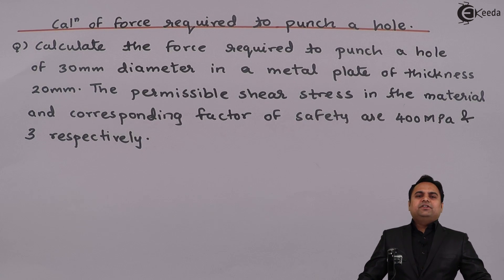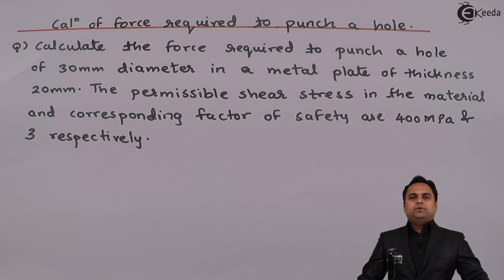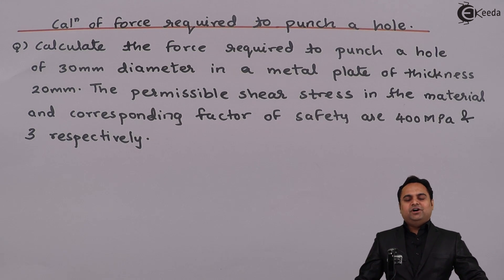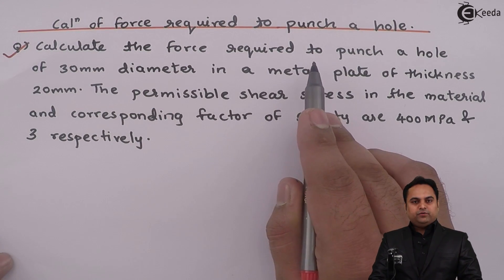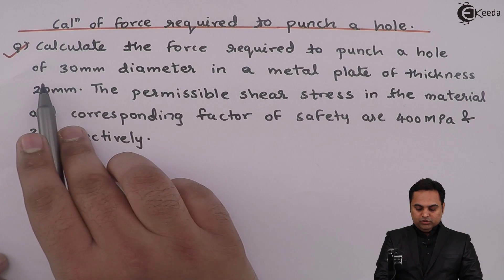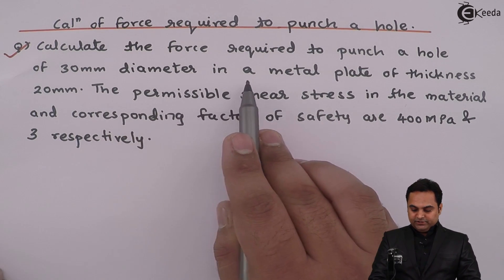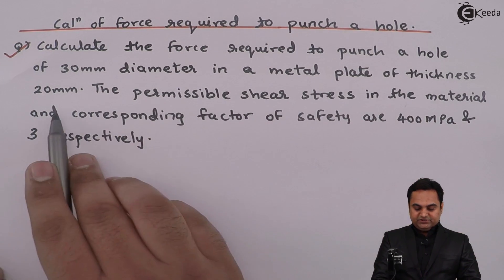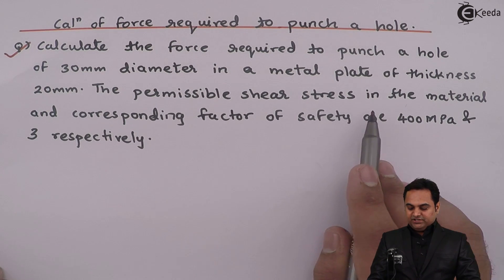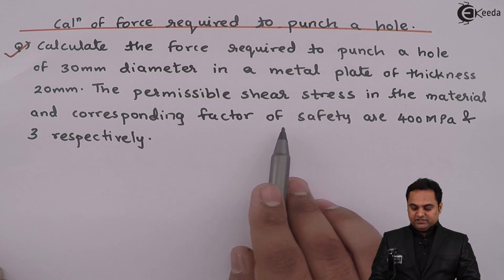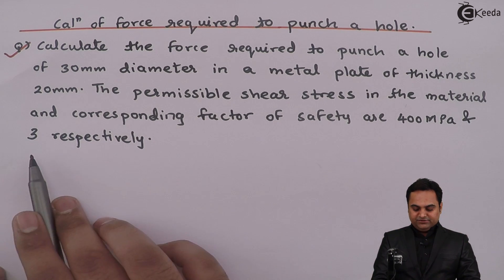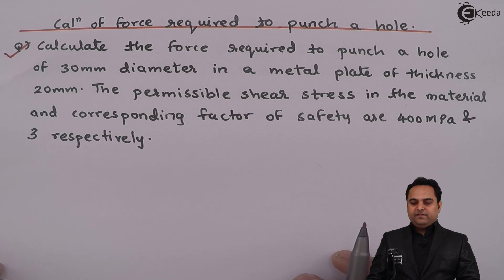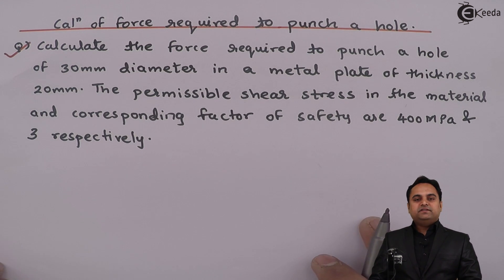Hello students, in this video we are going to see a problem on calculation of force required to punch a hole. The question is: calculate the force required to punch a hole of 30 mm diameter in a metal plate of thickness 20 mm. The permissible shear stress in the material and corresponding factor of safety are 400 mega Pascal and 3 respectively.